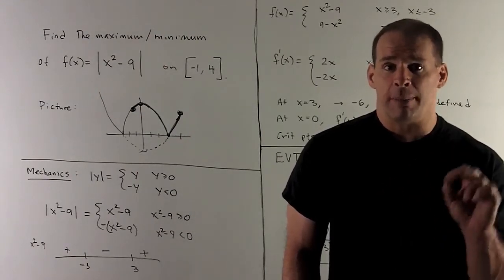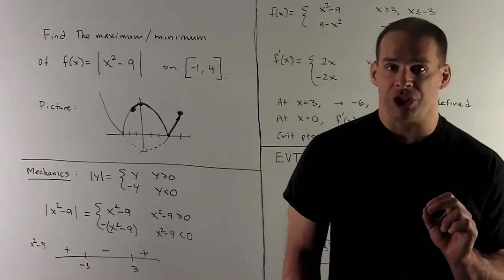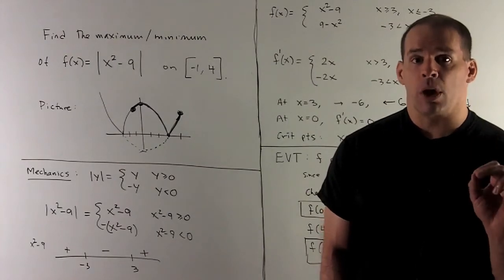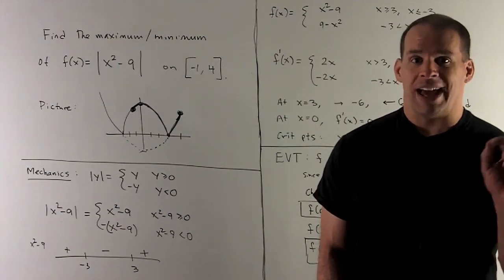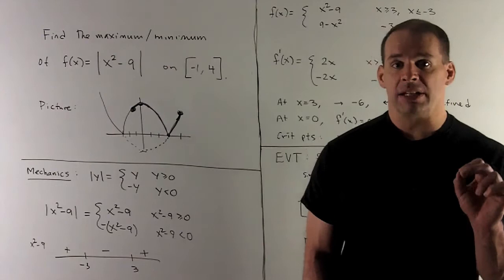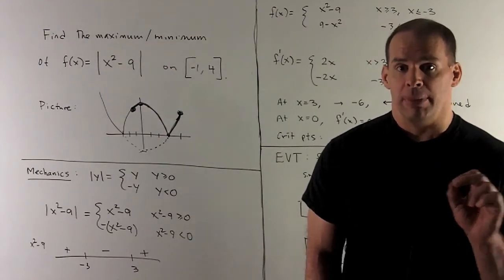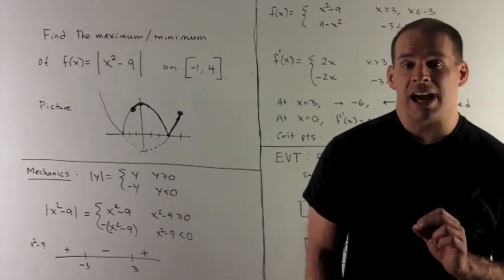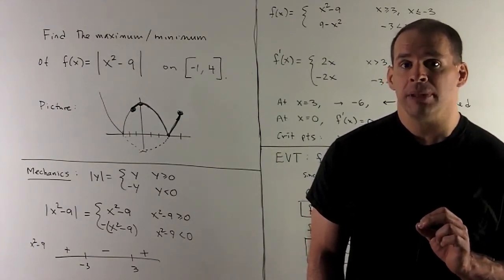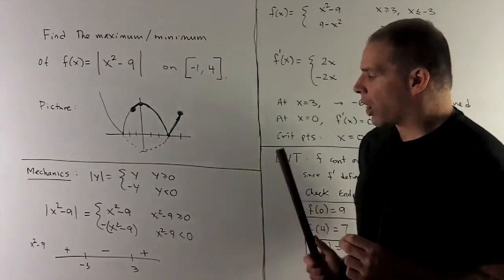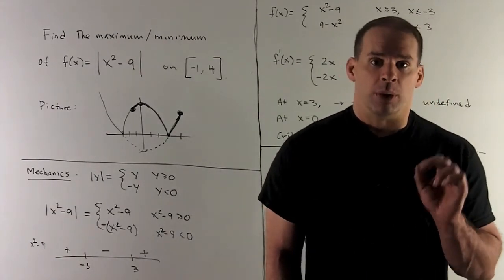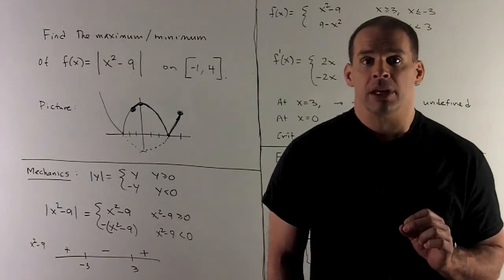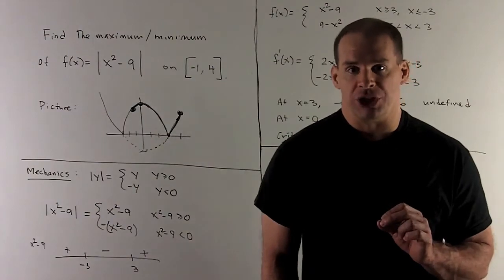We check a point in each region. For x < -3, plugging in x = -4 gives x² - 9 = 7, so it's positive there. In the middle region, x = 0 gives x² - 9 = -9, so it's negative. For x > 3, plugging in x = 4 gives x² - 9 = 7, so it's positive there.